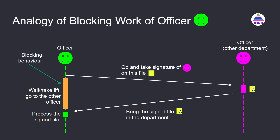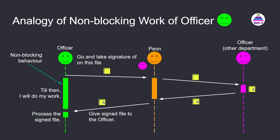Now let's see another possible solution. In this case, the first officer himself is not going for the signature, but he sends a peon along with the file to take the signature. The peon will go to the office of the other department, take the signature, and come back. When the first officer hands over the file to the peon, the peon gives a promise: 'Sir, I'll bring the sign on this file, or if I could not, I'll bring the reason why the file could not be signed.'